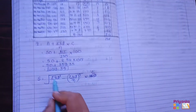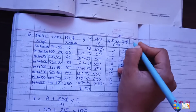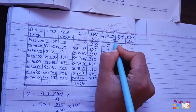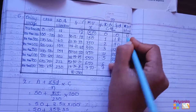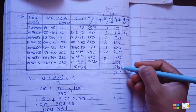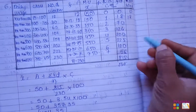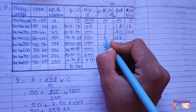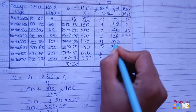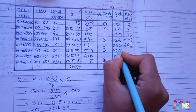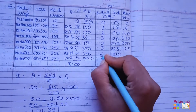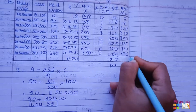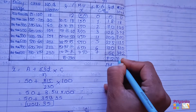For this we need sigma Fd². Multiply the Fd column by the d column: 0 times 0 is 0; 18 times 1 is 18; 70 times 2 is 140; 126 times 3 is 378; 200 times 4 is 800; 225 times 5 is 1125; 120 times 6 is 720; 56 times 7 is 392. The total sigma Fd² is 3573.